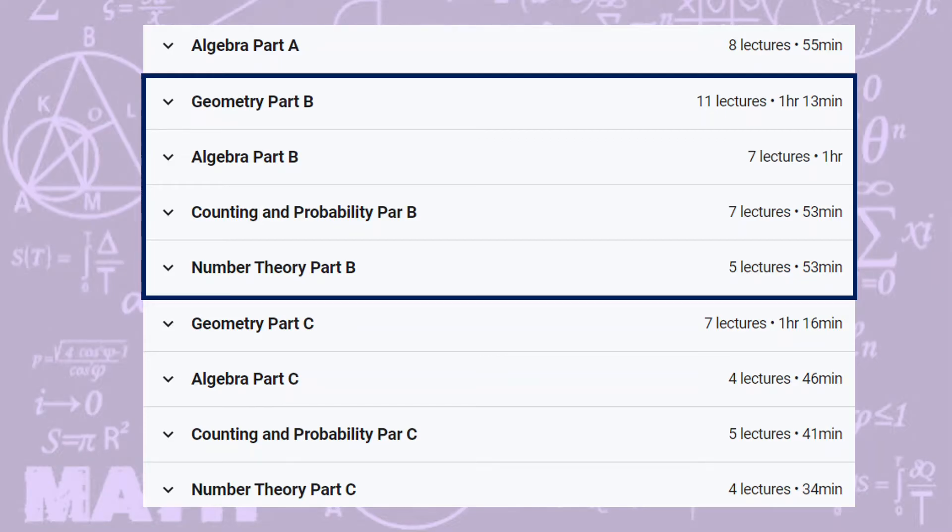Part C typically are questions 21 to 25. These are the most complex questions, similar to AIME level.